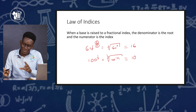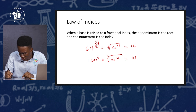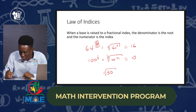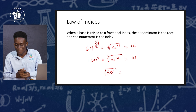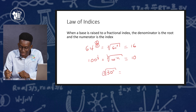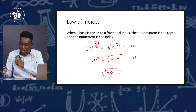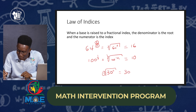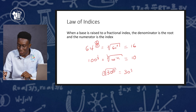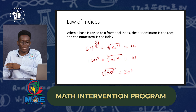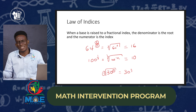Sometimes you may be asked to go in reverse — for example, the cube root of 3 squared, expressed as a fractional index. The number outside the root sign becomes the denominator, so this would be written as 30 raised to the 2 over 3 power. That is all there is to this law.